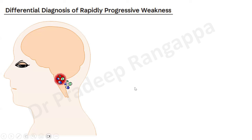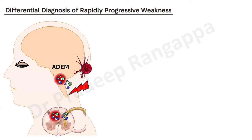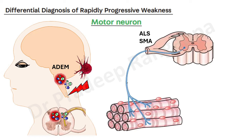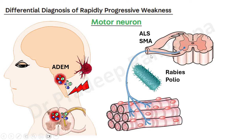When we talk about central causes, these mainly include brainstem encephalitis, acute demyelinating encephalomyelitis, brainstem compression, leptomeningeal malignancy, tumor compression, and transverse myelitis — these are some central causes of neuromuscular weakness. When we talk about motor neuron, the common causes are amyotrophic lateral sclerosis, spinal muscular atrophy, and some viral infections like rabies and polio — these are known to affect the motor neuron.